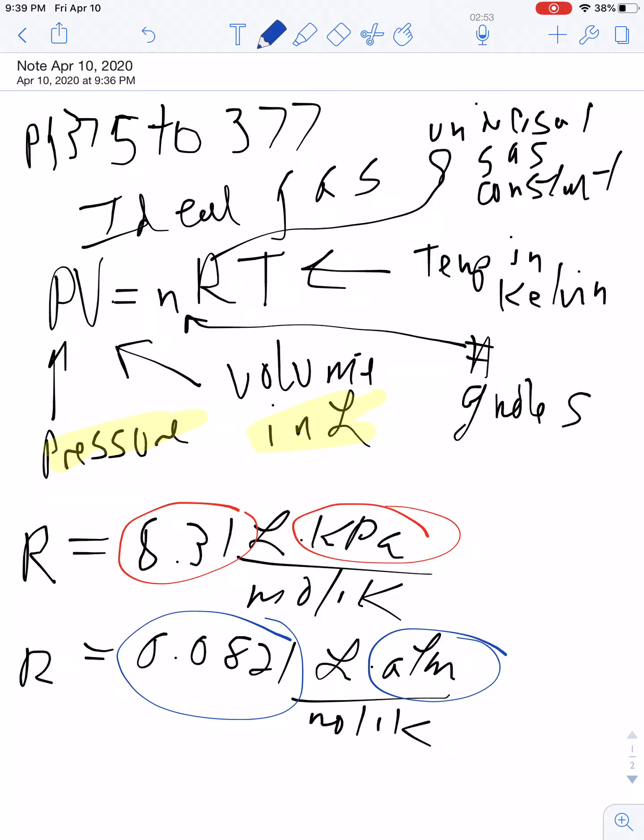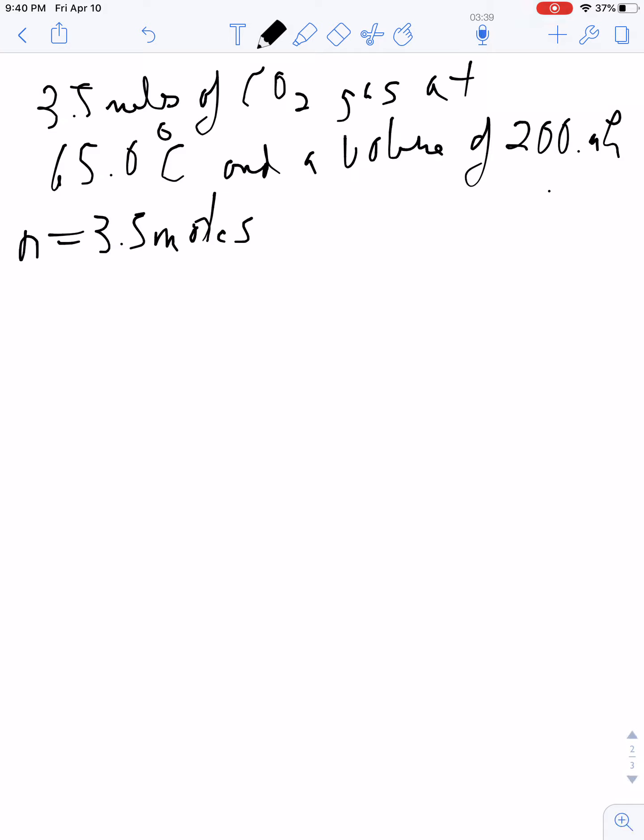Let's start with finding the pressure. Let's say we've got 3.5 moles of carbon dioxide gas at 65 degrees Celsius and a volume of 200 milliliters. Anytime you attack a problem, write down all the information you know—don't try to skip to solving it. Write down your info; that'll help you this year and next year in physics.